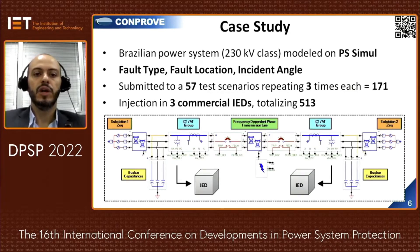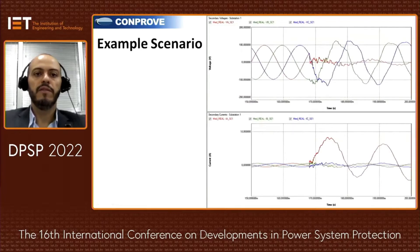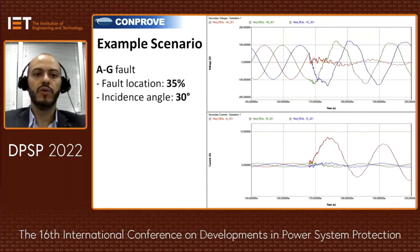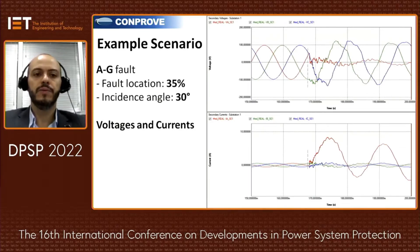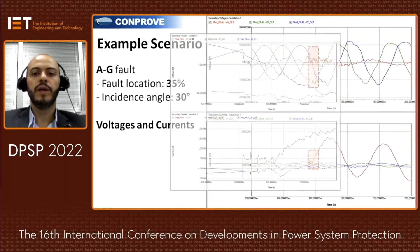Here on screen is the modeled system. In the middle we have the transmission line with a frequency-dependent model, circuit breakers on each side, and CTs and VTs on each side. Bus bar capacitance was also modeled — this is really important for TW simulation — along with the equivalent of the rest of the circuit. Here is a detailed scenario of one injected test: an AG ground fault in substation 1 at 35% location and an incident angle of 30 degrees. Above you can see the voltage and below the current signal; with a zoom you can see the waveform and the high-frequency content in detail.